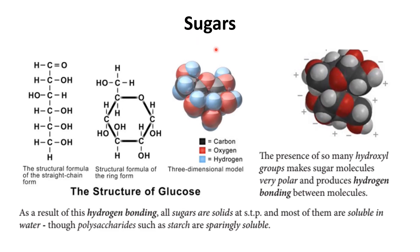Sugars are also solid at room temperature because of the structure of the sugar molecule. The straight-chain form of the sugar molecule has multiple hydroxyl groups, which lead to hydrogen bonding between molecules, making the interactions very strong. As a result of this hydrogen bonding, all sugars are solid at STP and they are soluble in water, although polysaccharides such as starch are sparingly soluble in water.